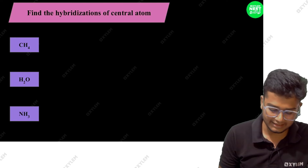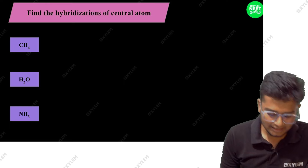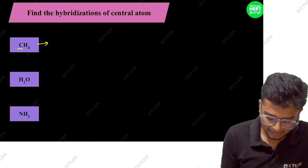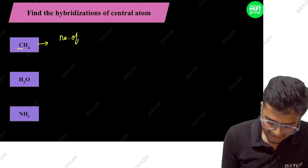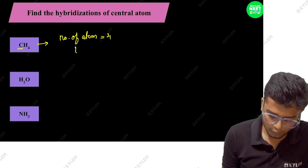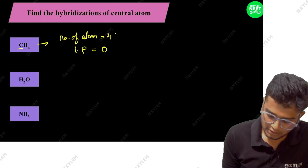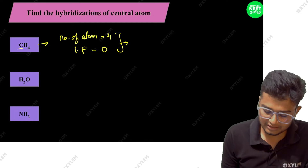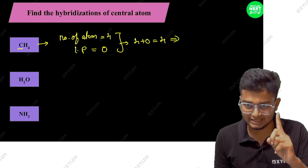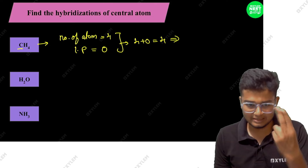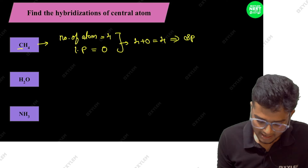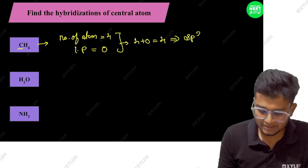First example: methane. The central atom is carbon. Number of atoms attached to carbon: 4 (four hydrogens). Lone pairs on carbon: 0. So 4 plus 0 equals 4. Looking at the table, 4 gives us SP3. So methane is SP3. Simple.